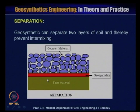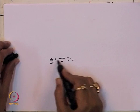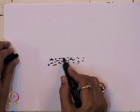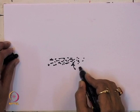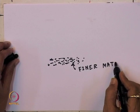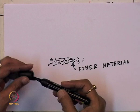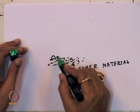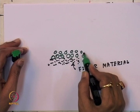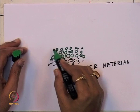What is separation? Geosynthetics can separate two layers of soil and thereby prevent intermixing. For example, if you have a finer material at the bottom and place good quality aggregate on top of the finer material, the coarser material will penetrate into the finer material and get lost.